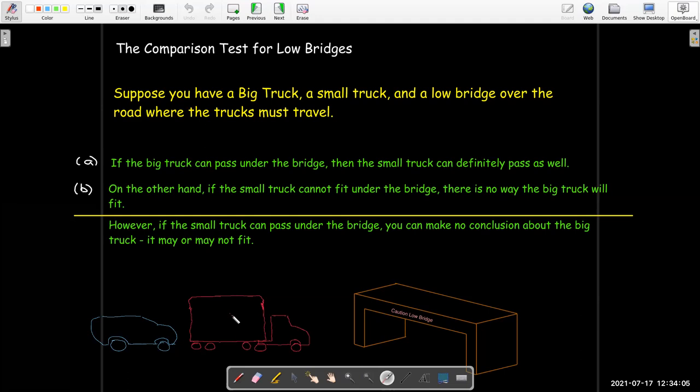In other words, if I have two series, one series has terms which are all smaller than the corresponding terms in the other series. If the smaller series is convergent, we can make no conclusion about the convergence of the larger series.